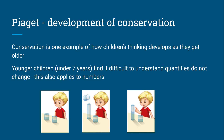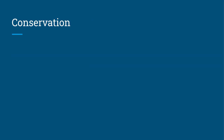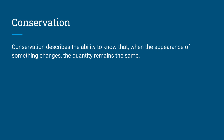This also applies to numbers. If you look at these pictures at the bottom here, in the first picture you've got two cups full of water, and then when we put the same amount of water into a thinner, taller glass beaker, the child thinks there's more in that taller beaker. They can't understand that there's the same amount of liquid in both of them — their thinking isn't sophisticated enough. So conservation describes the ability to know that when the appearance of something changes, the quantity or the amount remains the same.